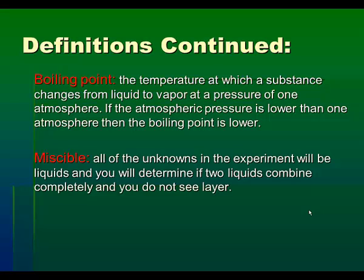Boiling point is the temperature at which a substance changes from a liquid to vapor at a pressure of one atmosphere. If the atmospheric pressure is lower than one atmosphere, then the boiling point will be lower. Miscibility or miscible simply references the unknown as a liquid and you'll be determining whether the two liquids combine completely and you do or do not see a layer.